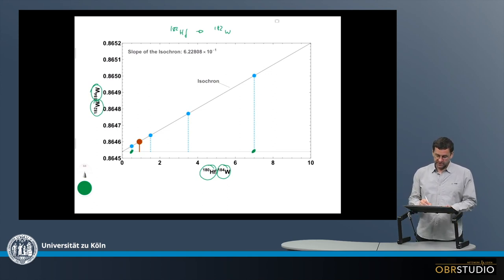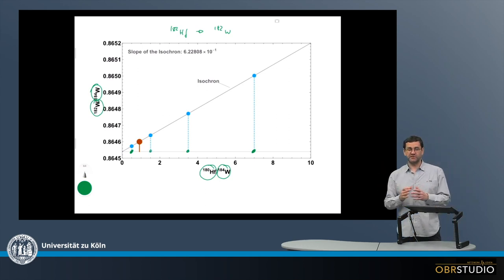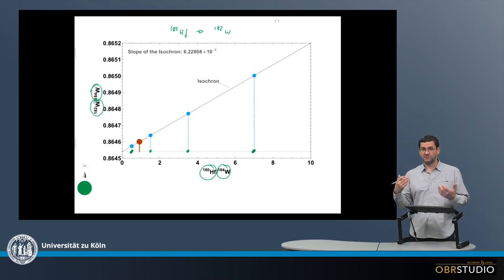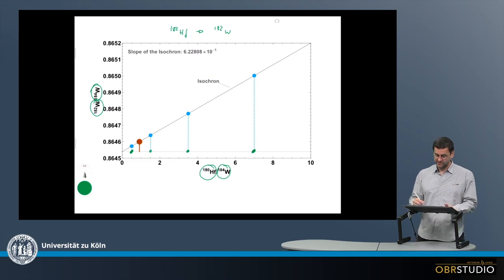So at the beginning, the beginning is down here. So at the beginning, these components had various Hafnium-Tungsten ratios, and at the beginning there was 182 Hafnium. And this 182 Hafnium was then decaying to 182 Tungsten, which means 182 Tungsten starts to form, and the composition of this component moves upwards.